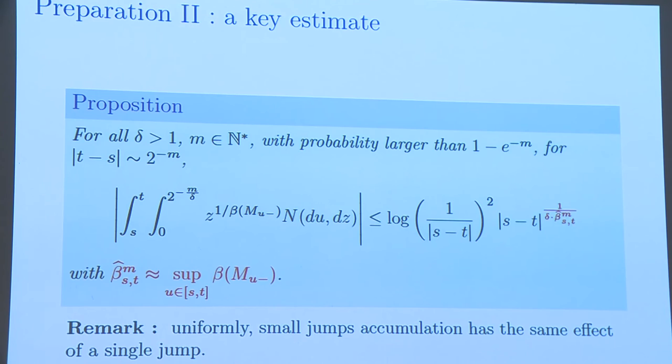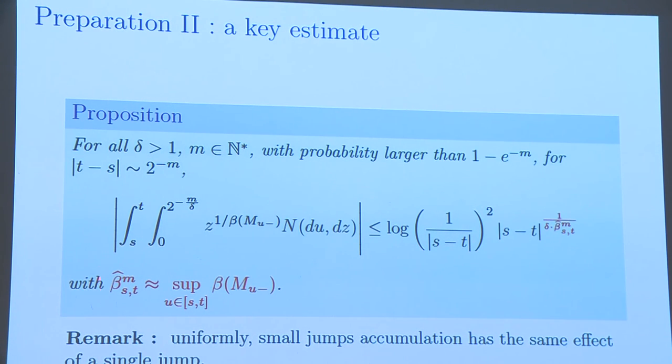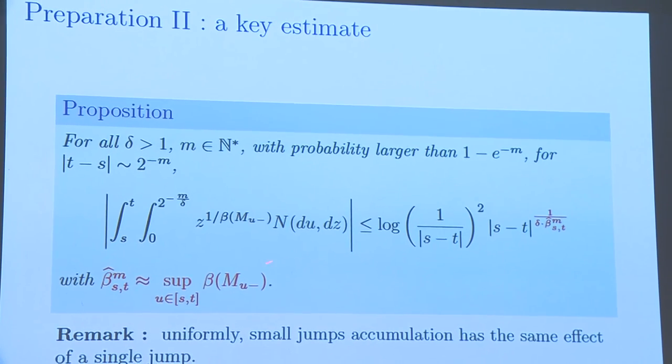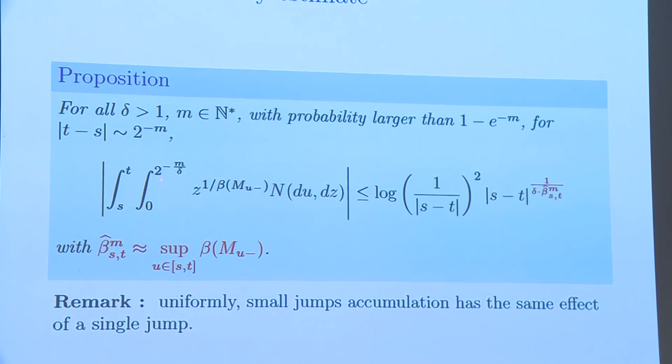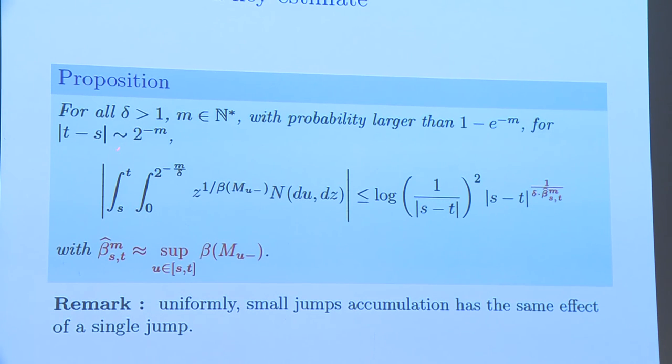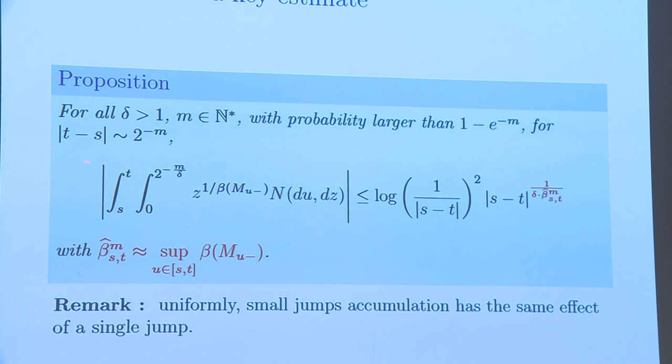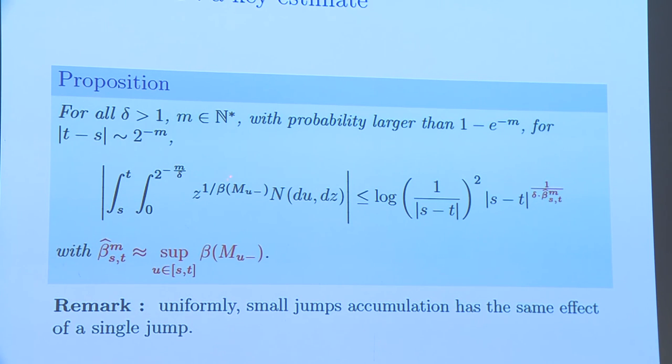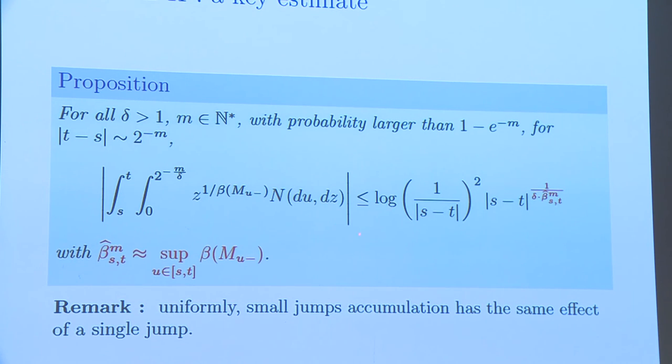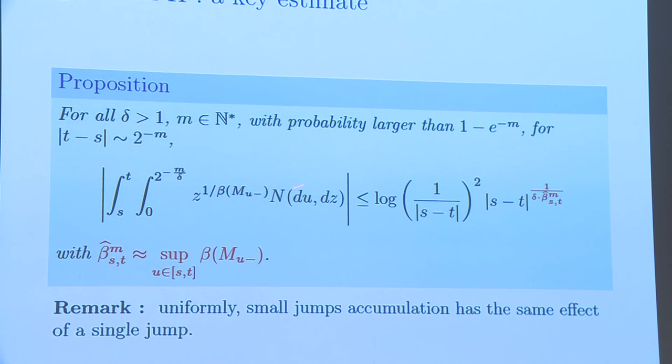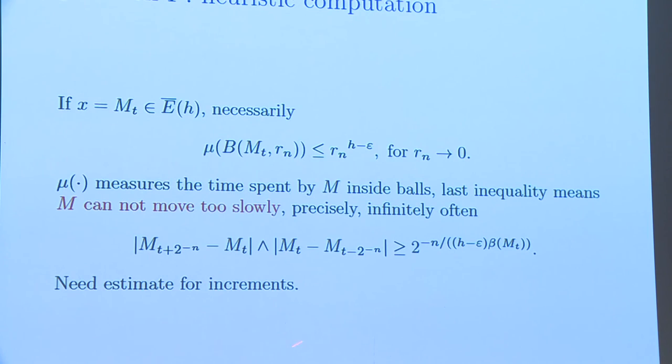The second key estimate is the following. If we consider the increment, this is not exactly the increment of our process m, but the increment truncated the large jumps bigger than the time increment power 2, 1 over delta. If we truncated all the large jumps of a certain scale, then we have this uniform control for the increment of the process. And the larger jumps are much easier to control. Once we have this, we can give a good estimate for the increment.